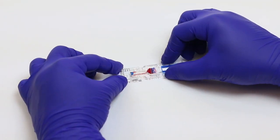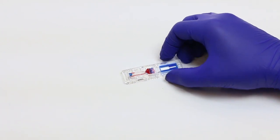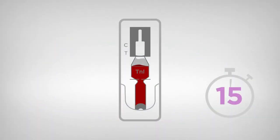Reattach the cap and place the test face up on a flat surface. Set a timer for 15 minutes. During this time, the red blood cells will separate and the plasma will continue up the viewing window.